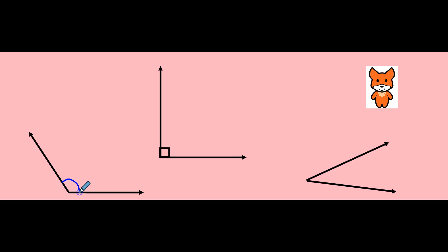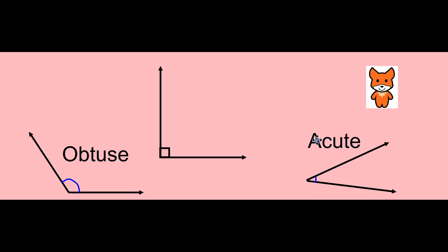If an angle is greater than a right angle, that angle is called obtuse. If the angle is less than a right angle, that angle is called acute.